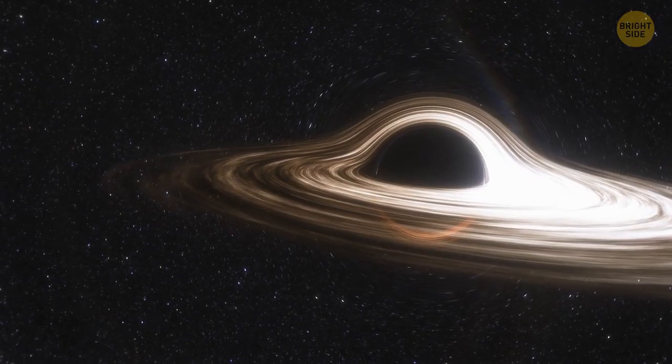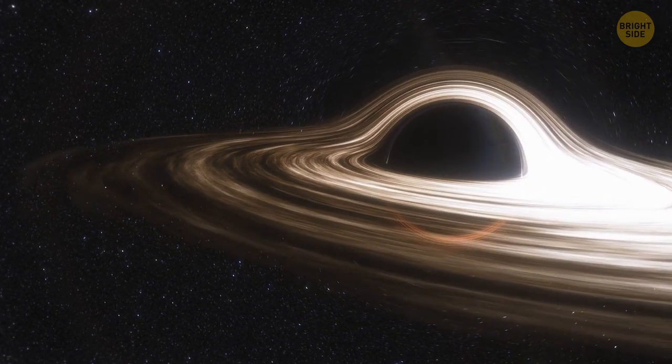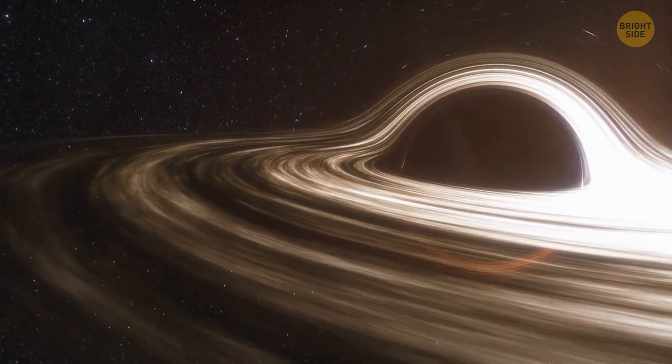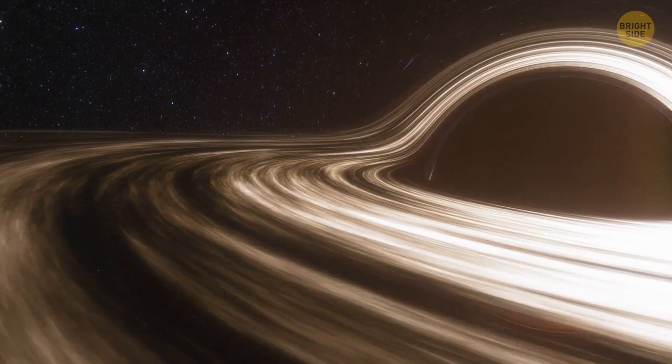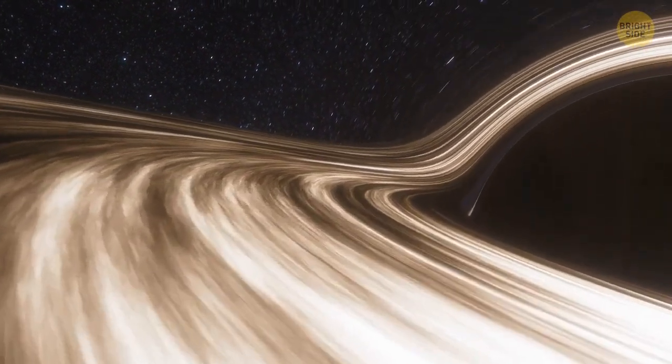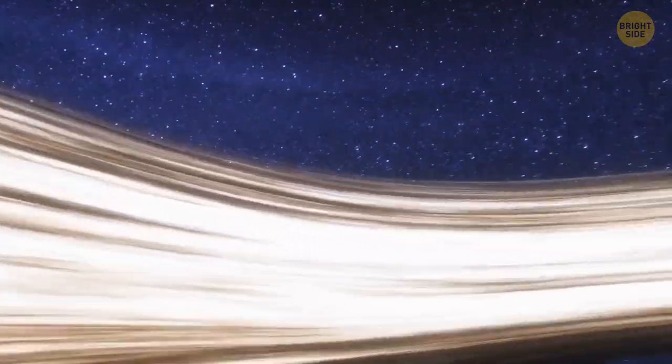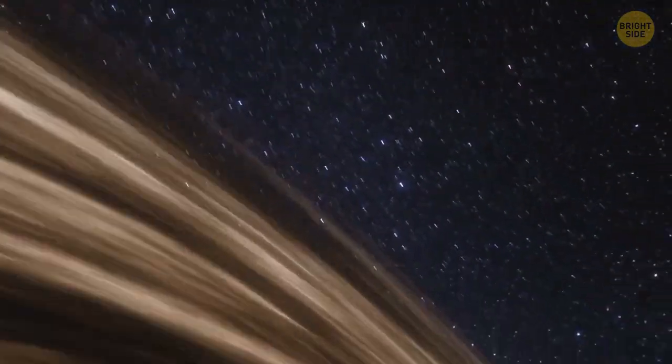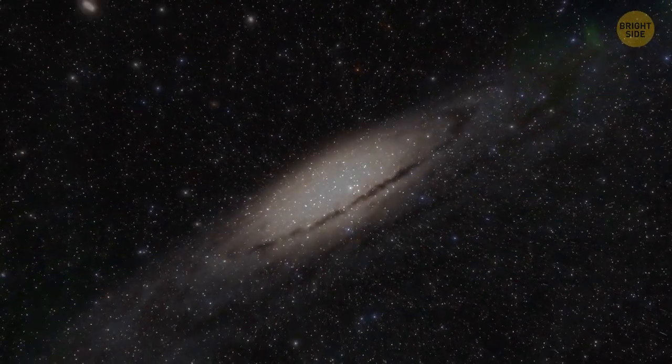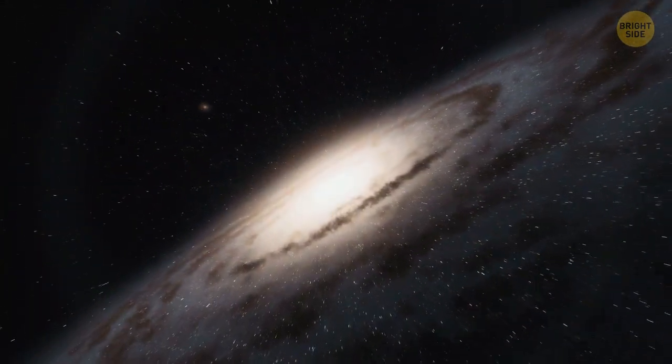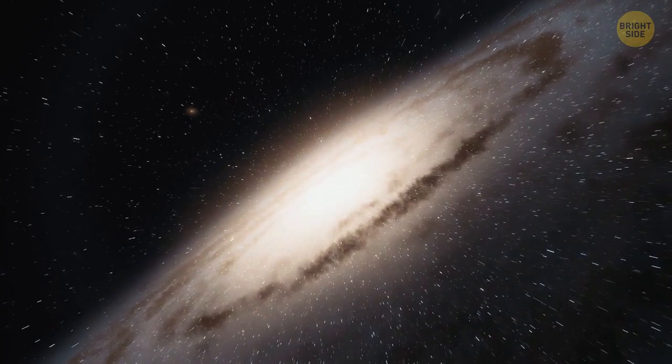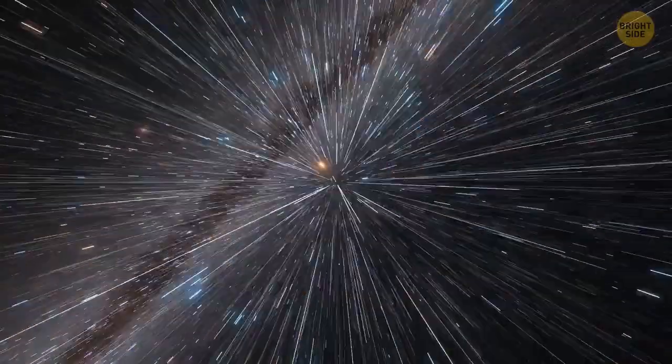Now, supermassive black holes are mega-monsters, churning slowly at the center of their home galaxies. They gather tremendous clouds of gas and dust around them, which makes them swell up to sizes the human mind can't begin to imagine. If a supermassive black hole, like the one that dwells at the center of our home Milky Way galaxy, moved even a little bit closer to our solar system, we'd be doomed.